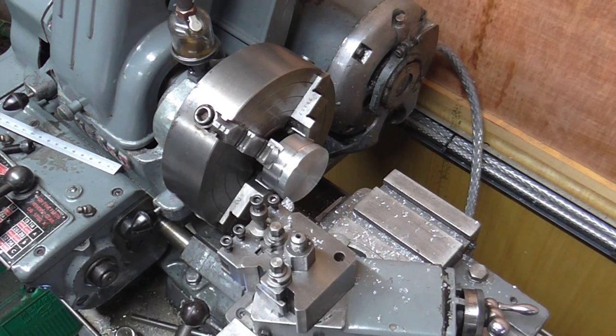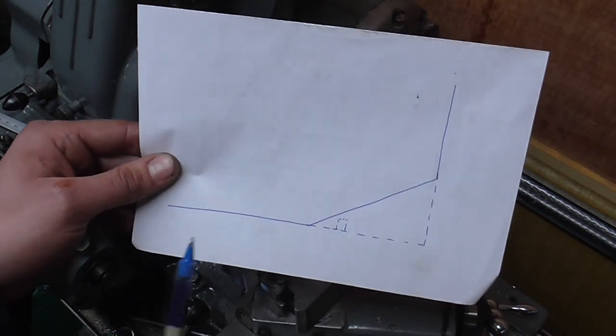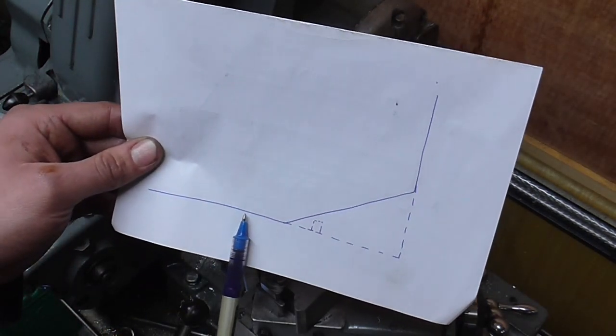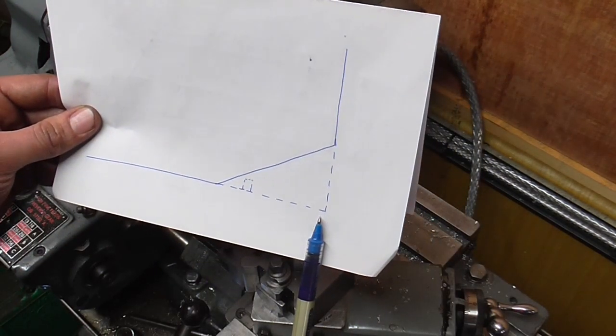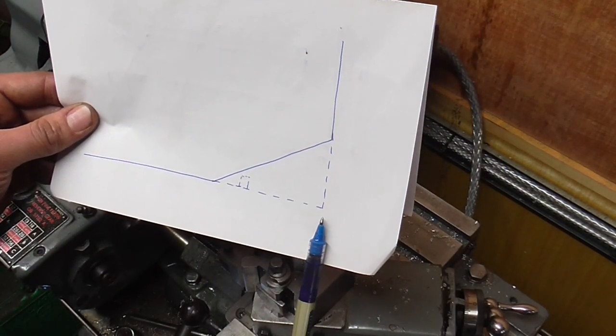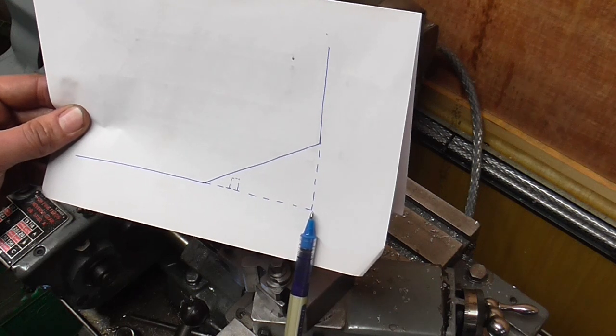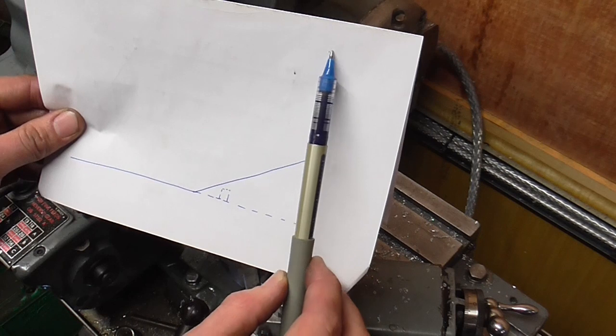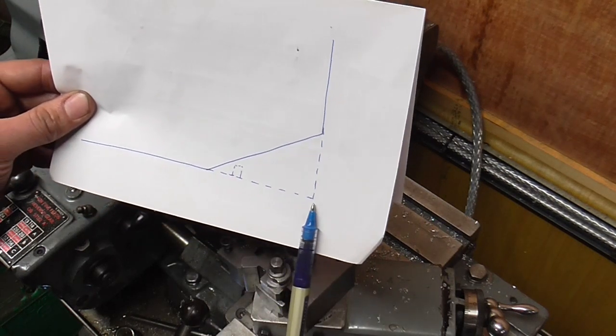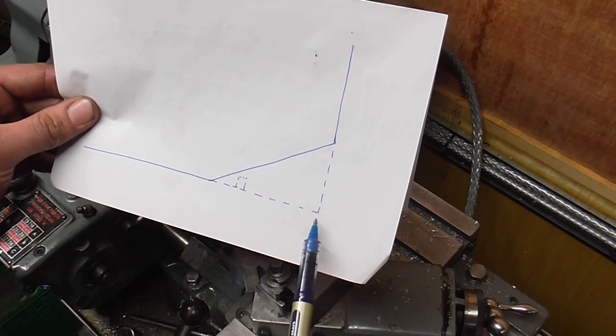So I can now make my moves. I'm going to feed the cross slide in to the diameter till I touch on, zero the cross slide, then come across here and set up for my finishing cut. Once I'm in position I'm going to lock the saddle.